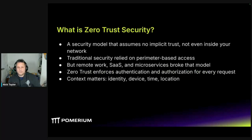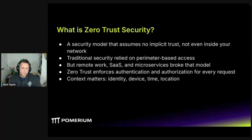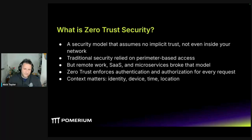So what is zero trust security? It's a security model that assumes no implicit trust — not even inside your network. Unlike traditional security, which relied on perimeter-based access where once you're in you were trusted and never questioned again, the rise of remote work, SaaS, and microservices broke that whole model. Zero trust enforces authentication and authorization for literally every request, and context matters. A little side note on the history: Google actually started zero trust — there are papers called the BeyondCorp papers, which came about due to a breach in the 2010s at Google.